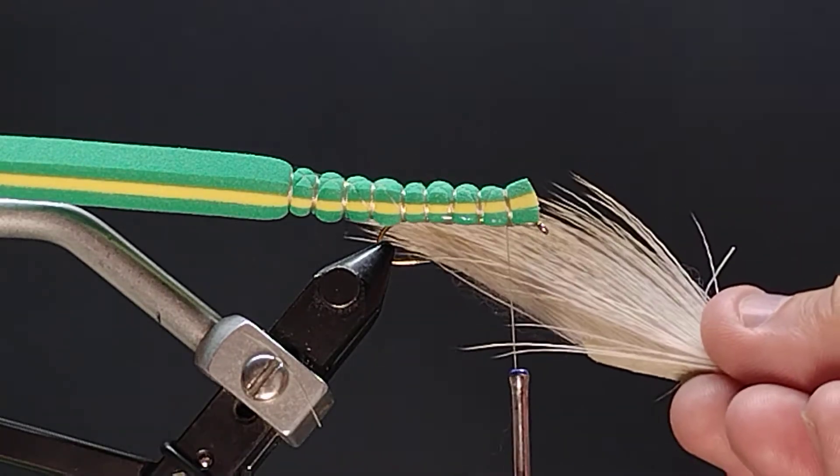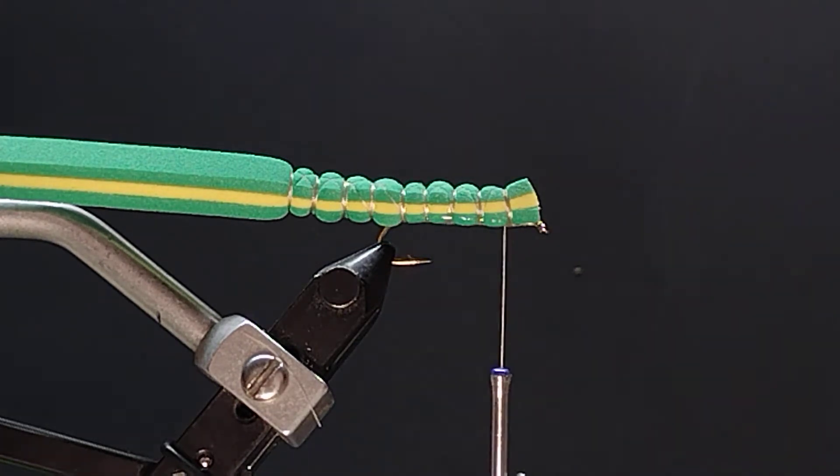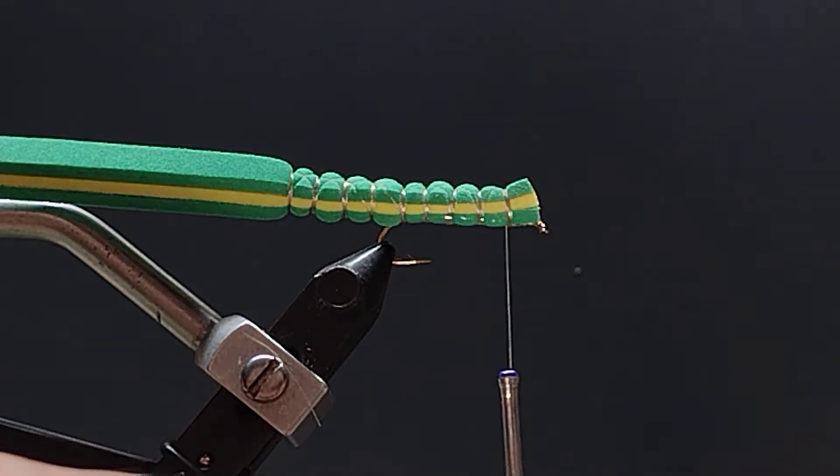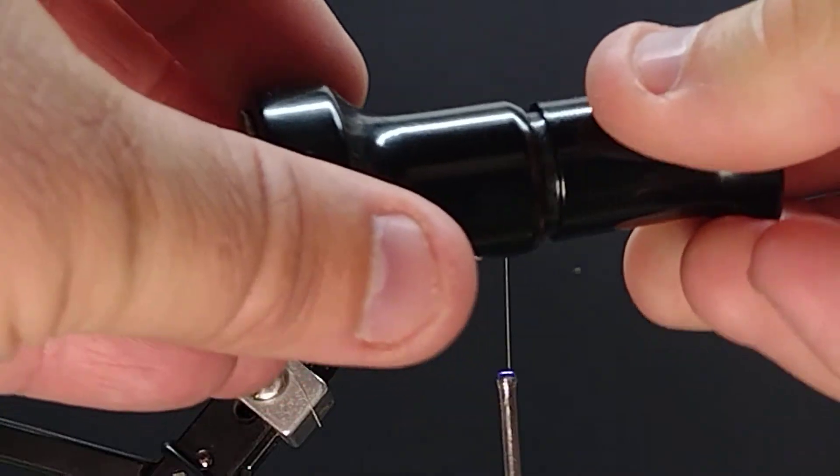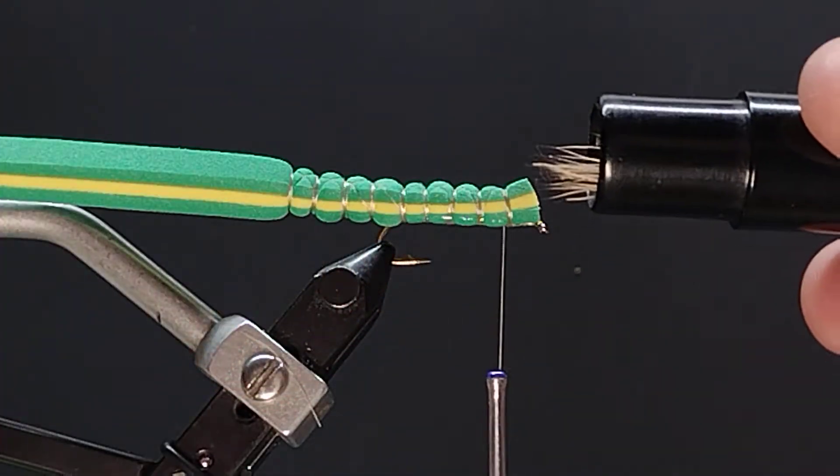Now we're going to take some of the deer hair, cut a little bit of that off, put it in the hair stacker, and plumb that on the desk to even out those tips. Now those tips are even on the end.